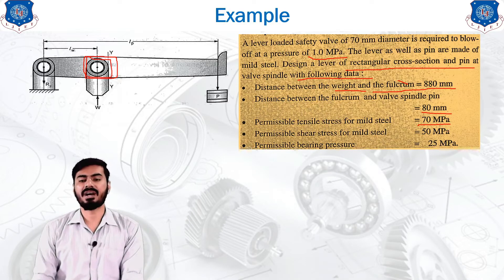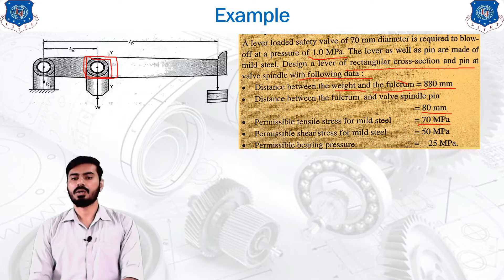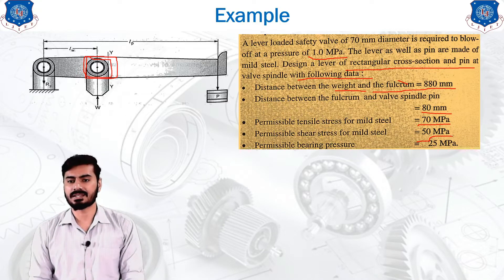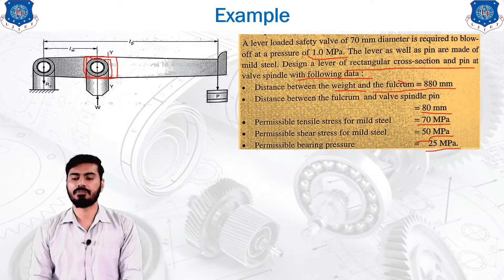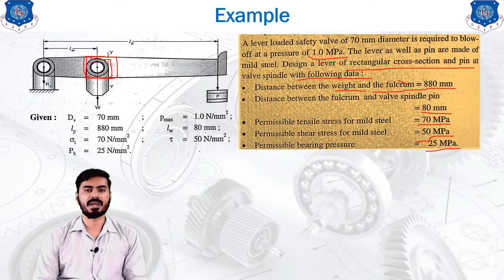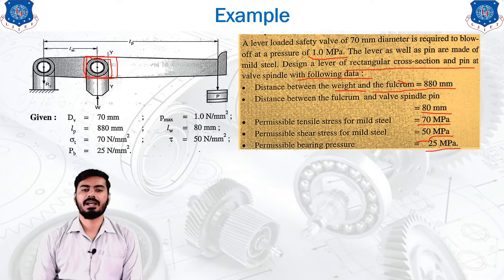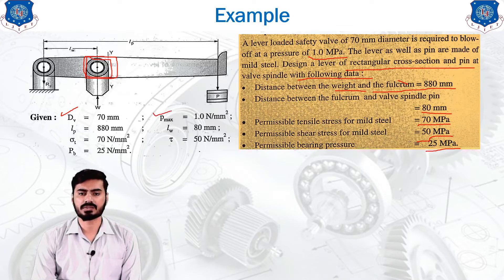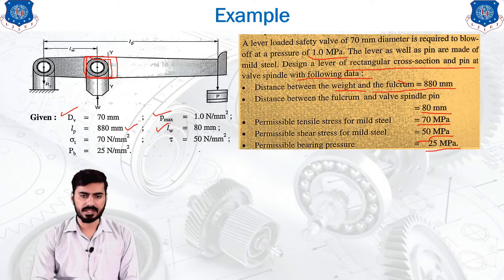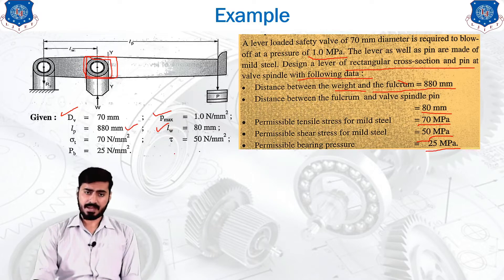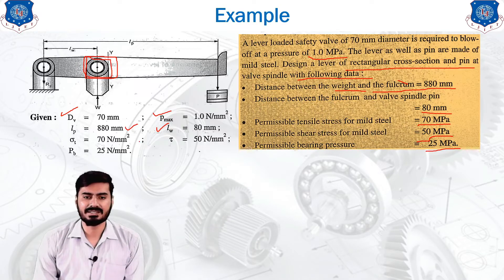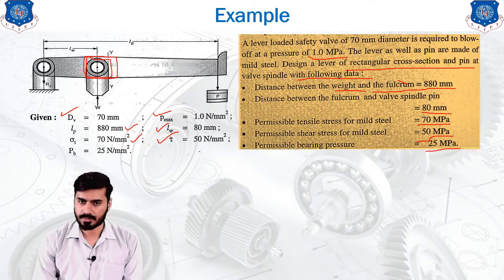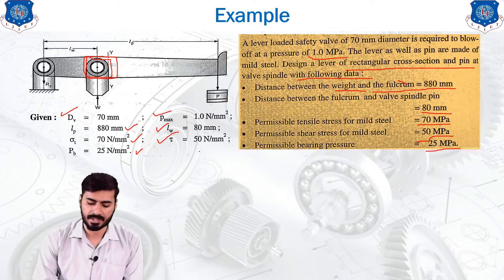The permissible tensile stress for mild steel, sigma t (also known as sigma b), is 70 mega pascal. The permissible shear stress for mild steel is 50 mega pascal, and the bearing pressure for the pin is 25 mega pascal. Summary of given data: diameter of valve = 70 mm, maximum pressure = 1 N/mm², LP = 880 mm, LW = 80 mm, sigma t = 70 N/mm², tau = 50 N/mm², Pb = 25 N/mm².